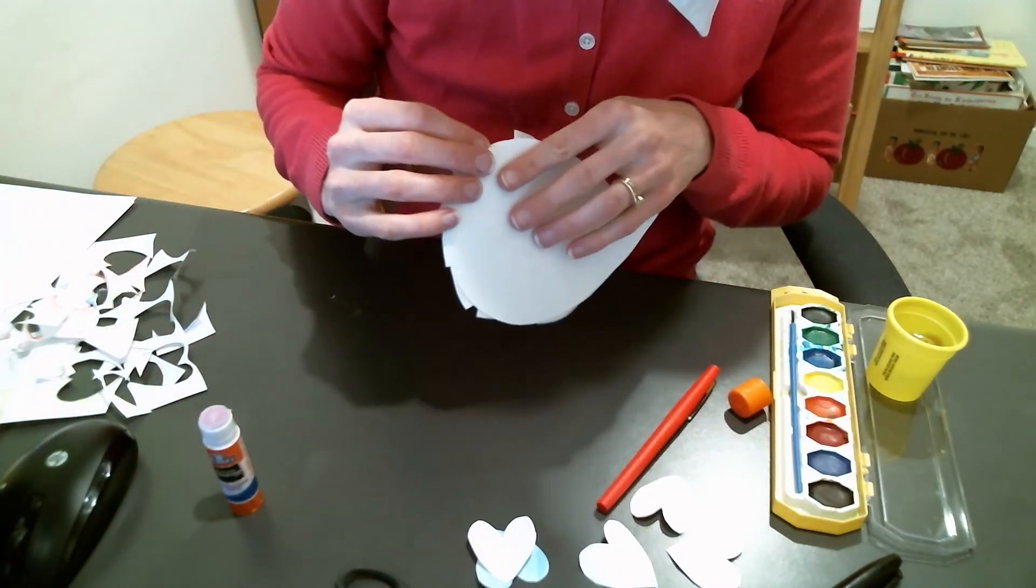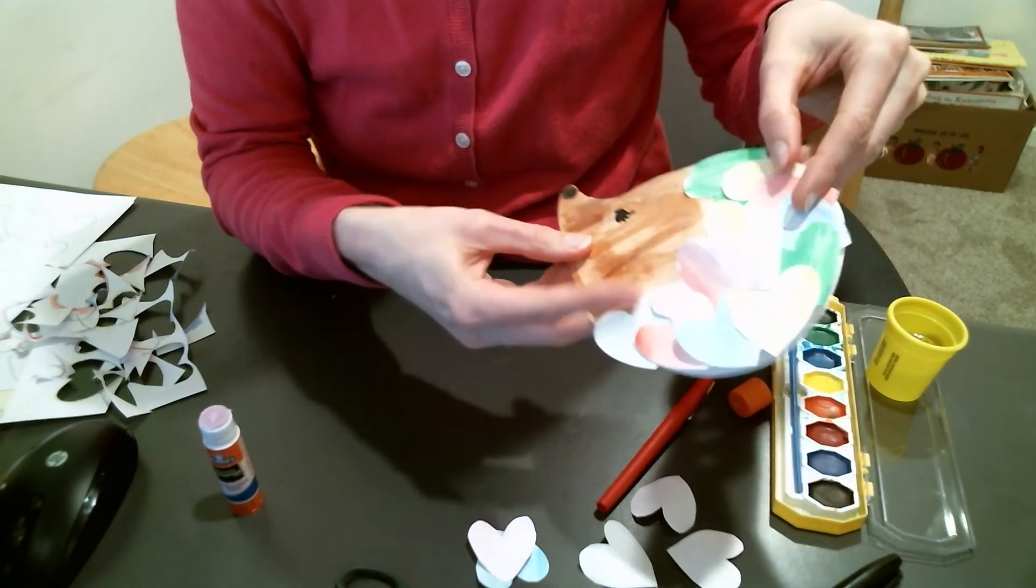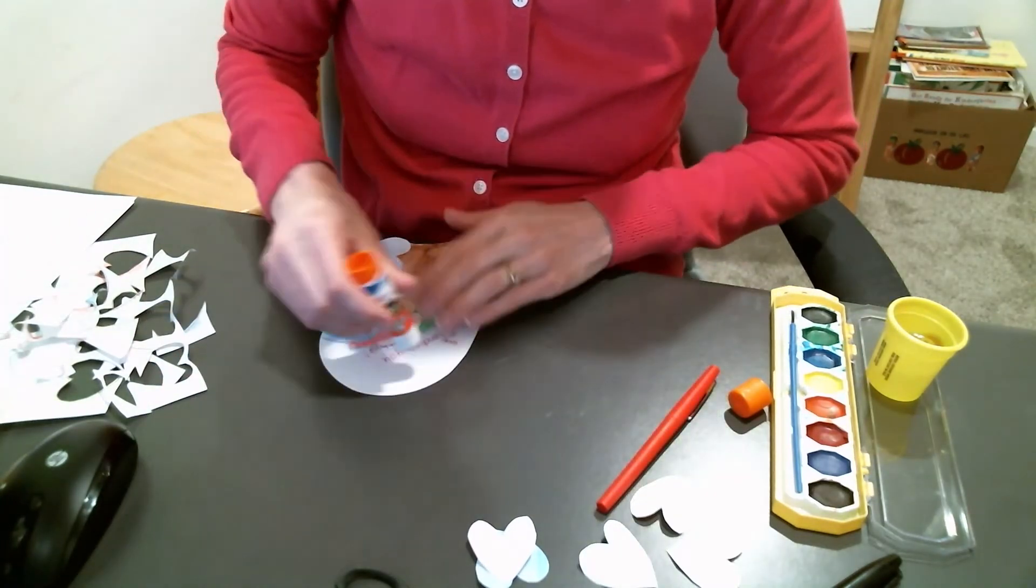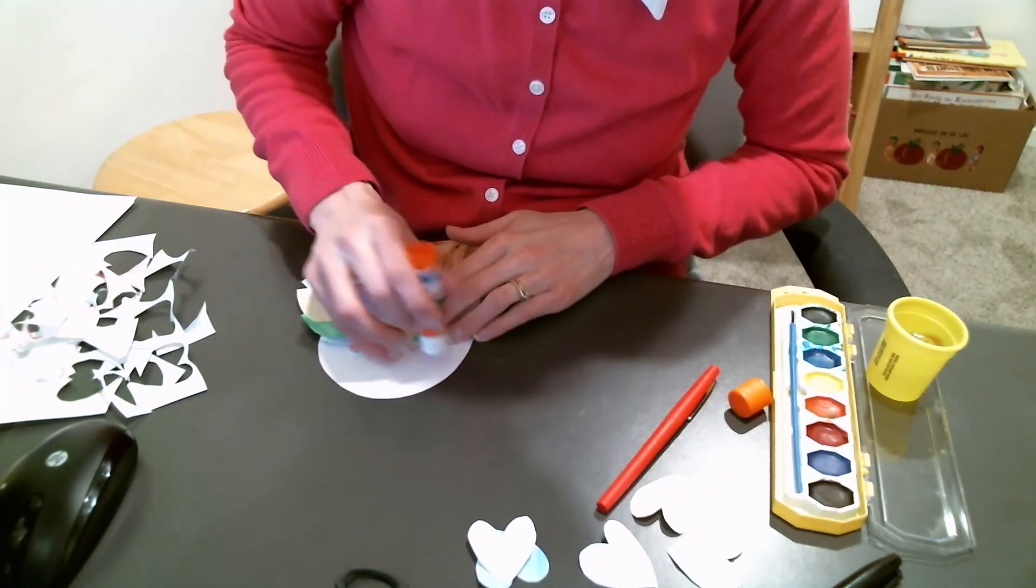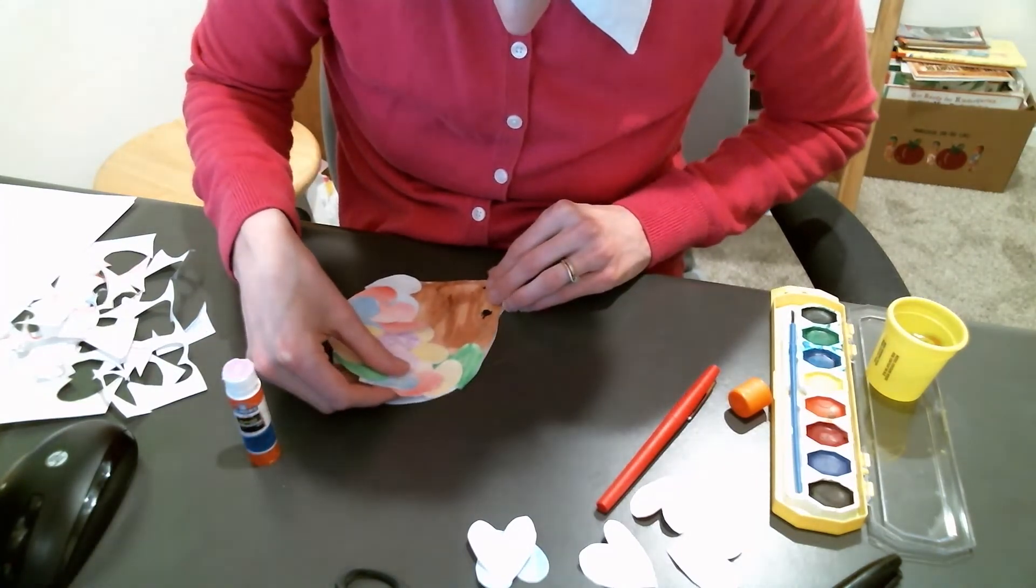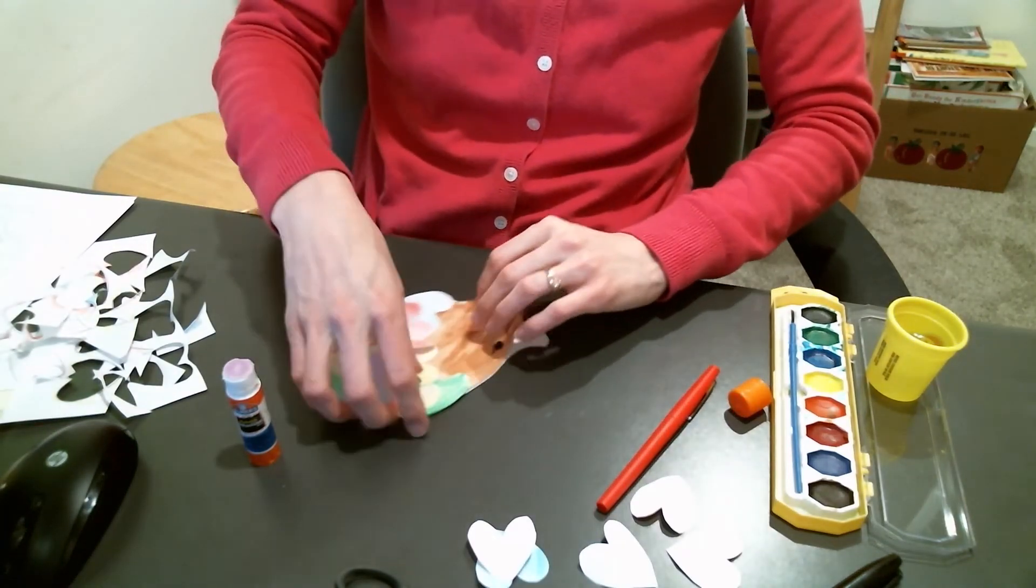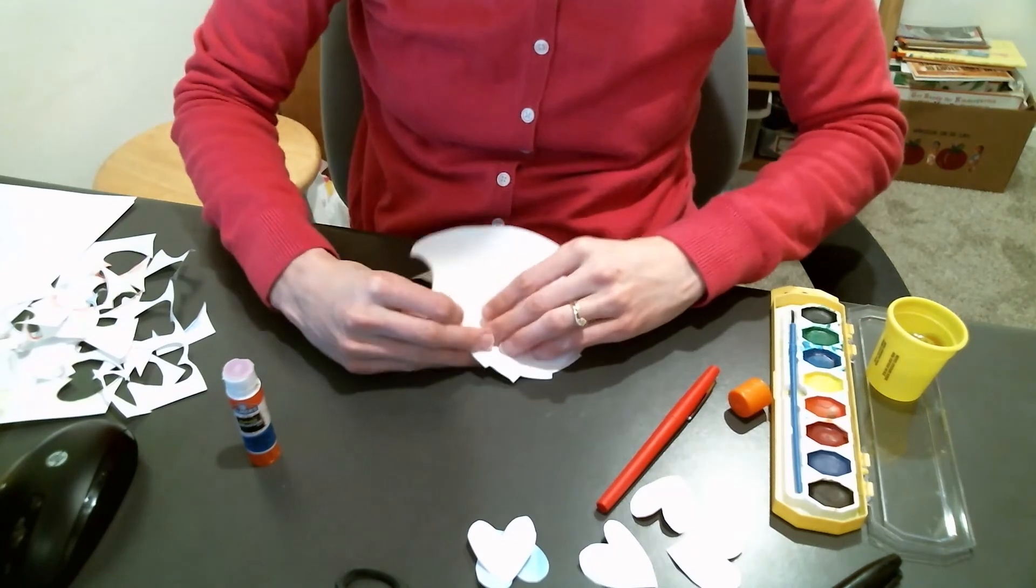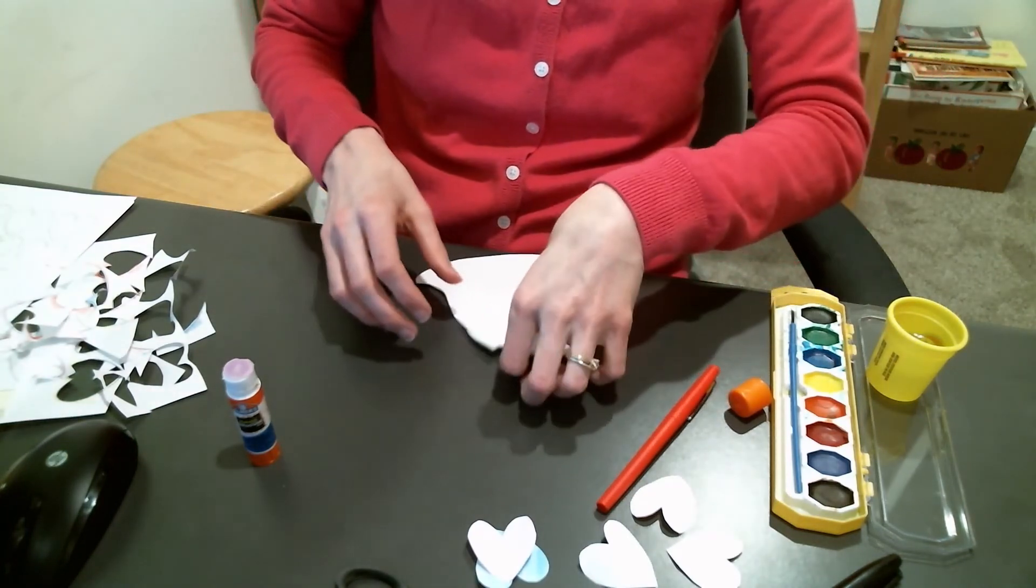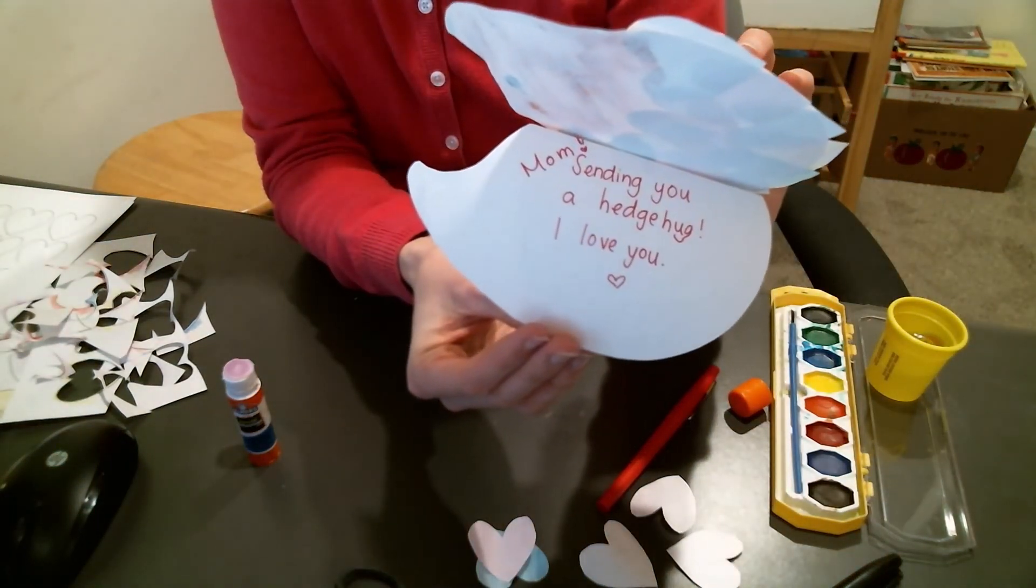You can attach the back of your card to the front. Line them up. You can either put some glue along the top, which is what I'm going to do. Or, if you want to make sure it stays on even better, a staple. Put a little staple in it. That will hold it really well. Tape could also work. And now, I'm going to do this. Now, we can open the card. And it says, sending you a hedgehog. I love you.